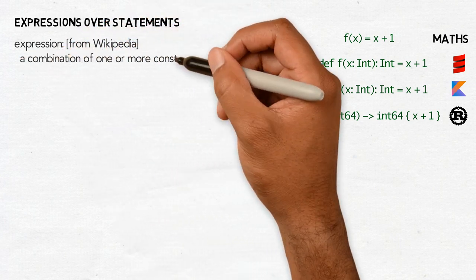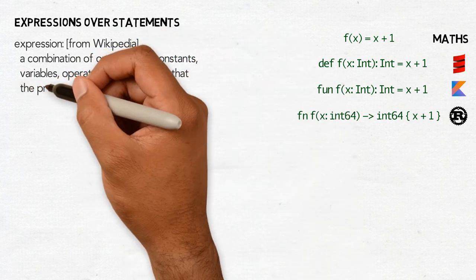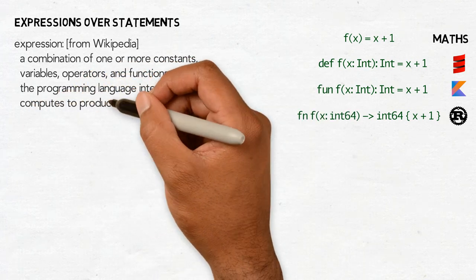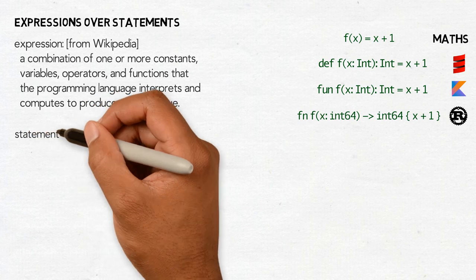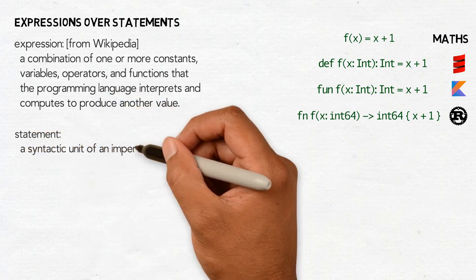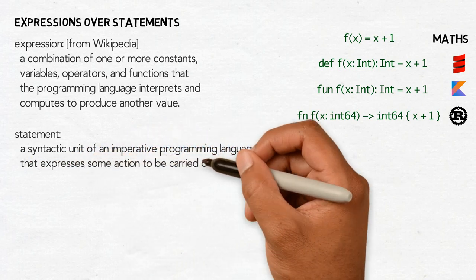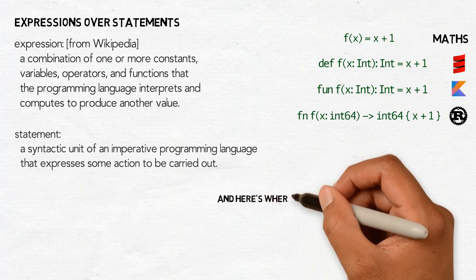An expression is a combination of one or more constants, variables, operators and functions that the programming language interprets and computes to produce another value. It does not mean that an expression cannot perform operations on the system, so-called side effects.